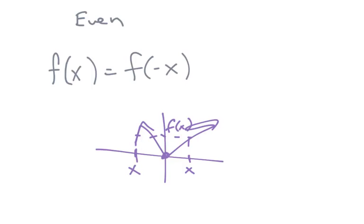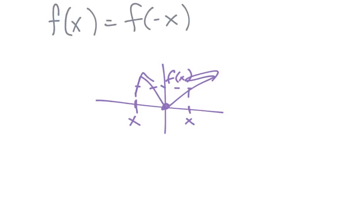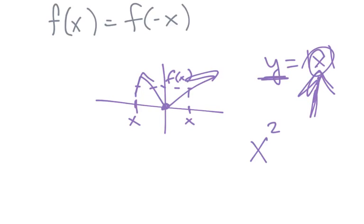So the question is, when would this occur? Well, I use the example of the absolute value function. This occurs any time you plug in a value into the function, and whether you plug it in as a positive or a negative, you always get the same y value. Well, that's going to occur when you have an even function, hence it's called even.